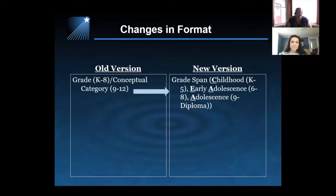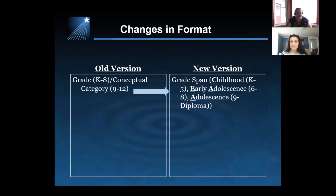We'll start with the old version, which was set up in grade levels from kindergarten through grade 8, and conceptual categories in grades 9 through 12. You'll now see in the new version that they're set up in grade spans. They're set up for childhood standards — those standards that relate to grades kindergarten through grade 5, denoted by the letter C. The early adolescence standards are the middle school grades 6 through 8 standards, denoted by EA. And the adolescent standards are the 9 through diploma standards, denoted by the letter A in our new coding system.